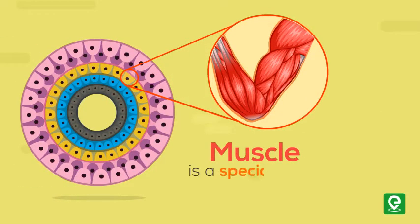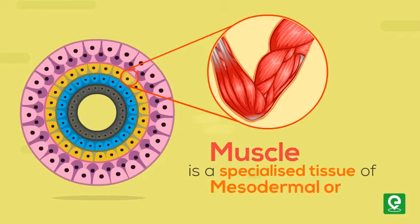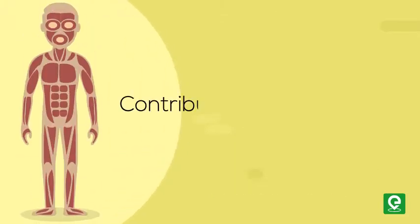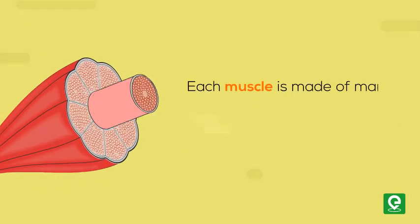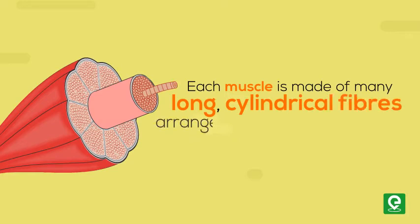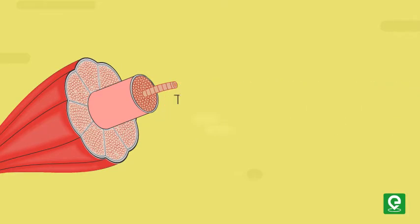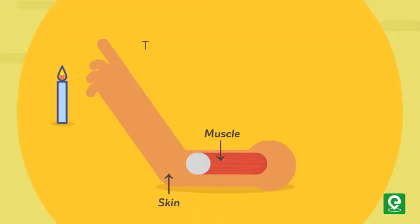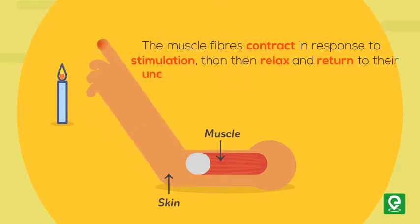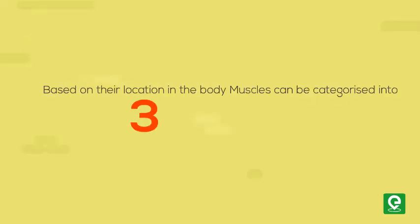Muscle is a specialized tissue of mesodermal origin and contributes about 40 to 50 percent of the body weight of an adult human. Each muscle is made of many long cylindrical fibers arranged in parallel arrays. The fibers are composed of fine fibrils called myofibrils. The muscle fibers contract in response to stimulation, then relax and return to their uncontracted state in a coordinated fashion.